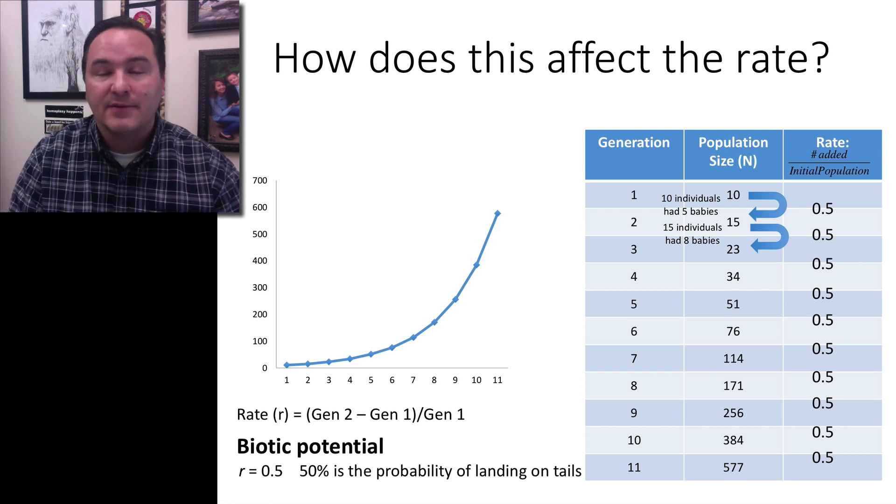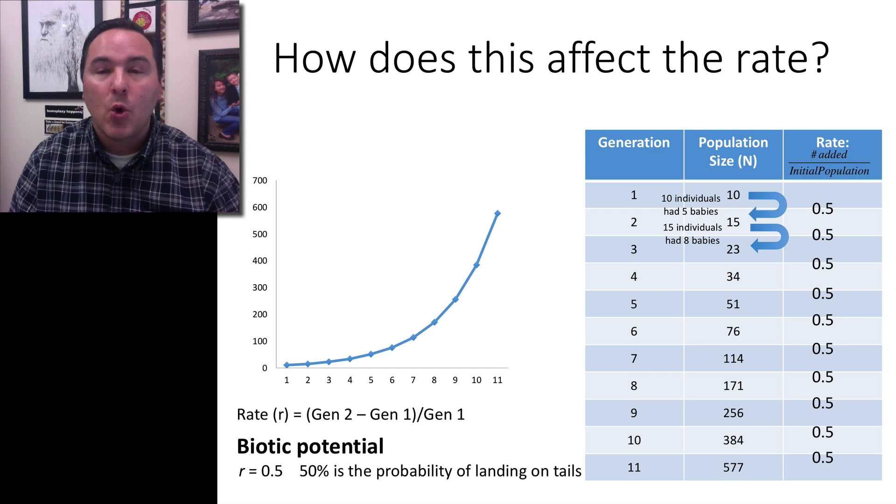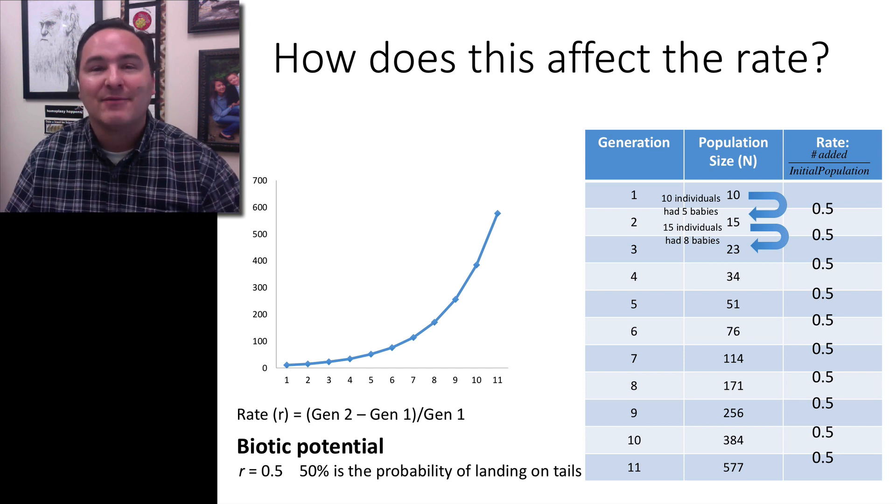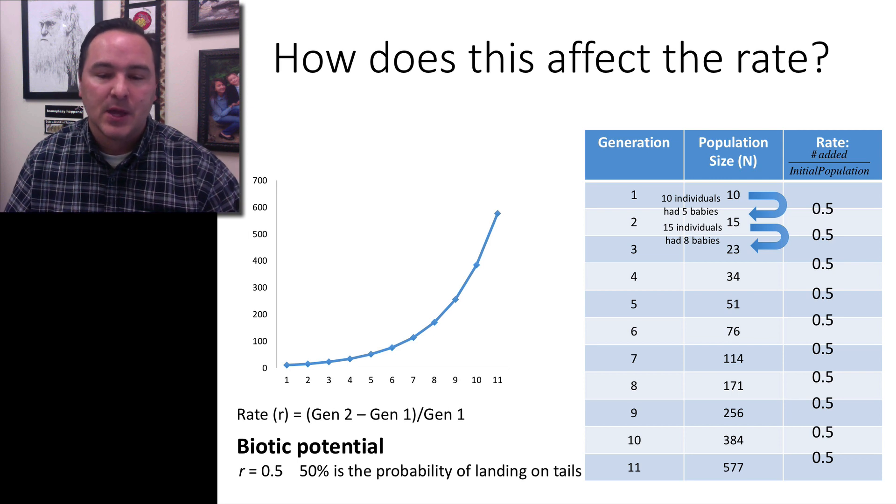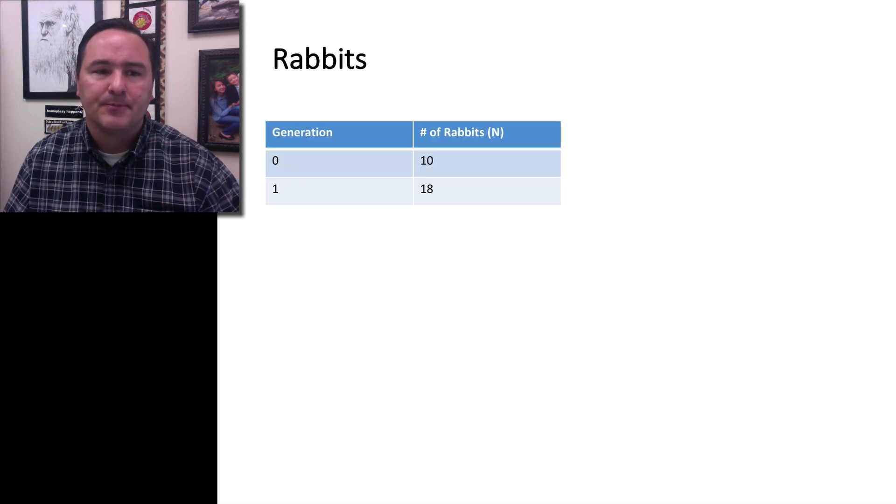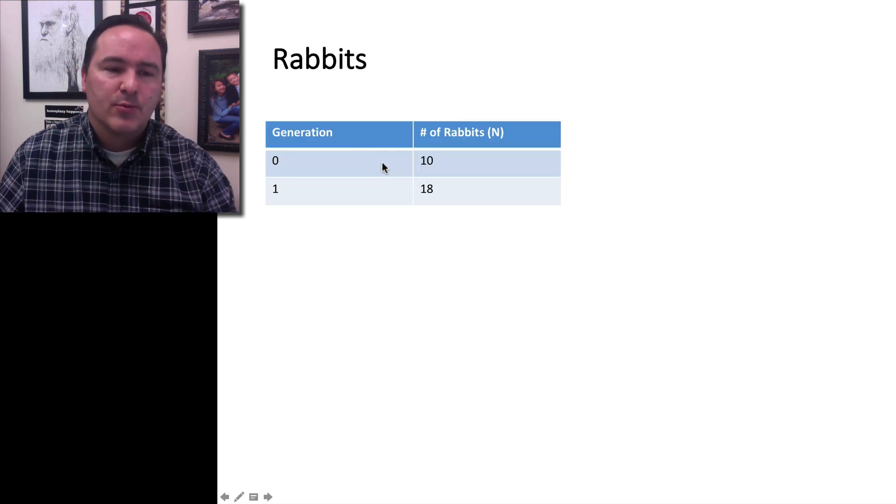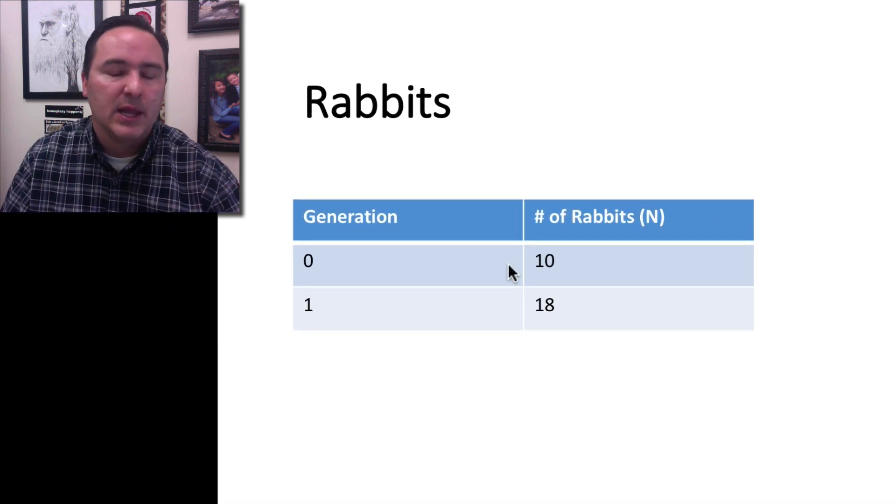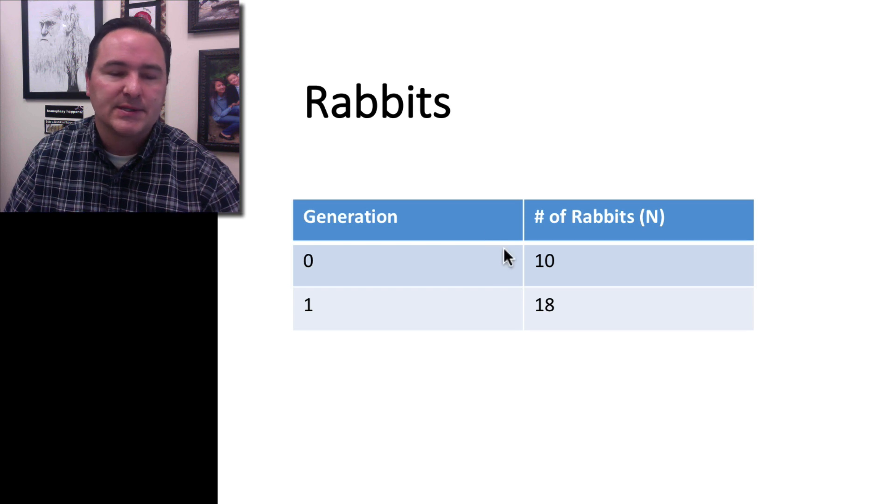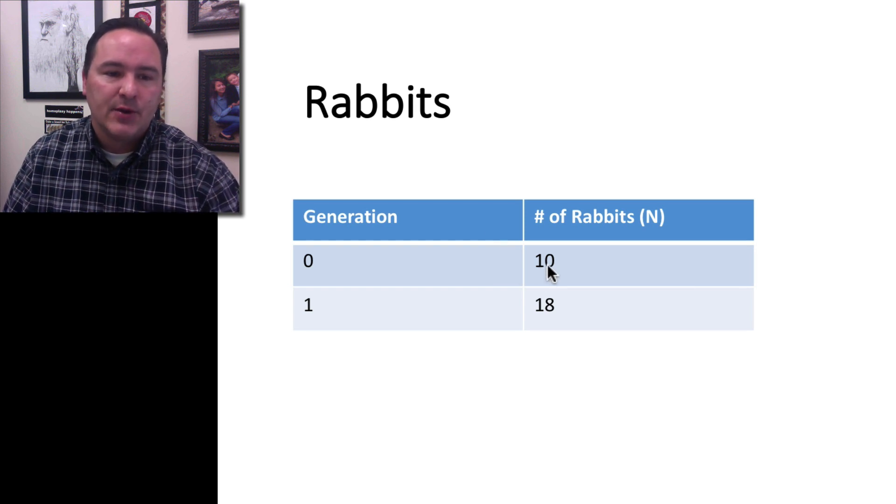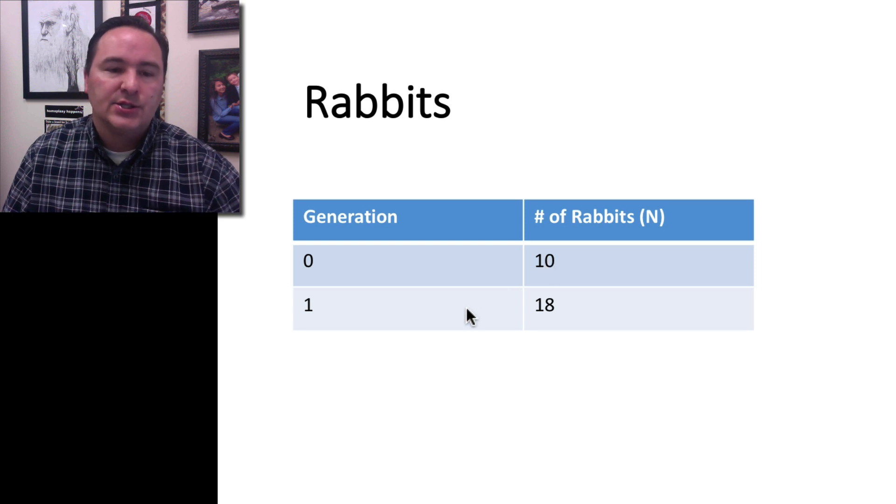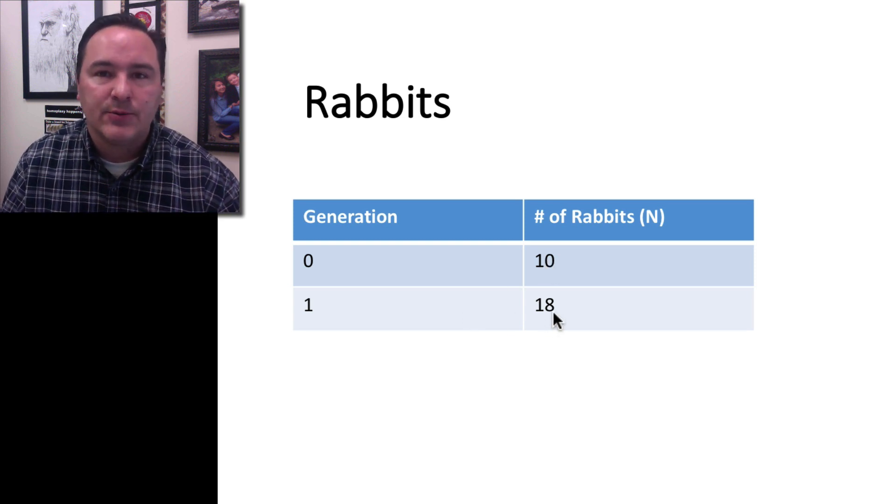We randomly assigned that on the coins because we assume if you flip a coin, you have about a half chance of it becoming tails. But let's look at more real data. We're going to look at some rabbits. This was data from a different place, not Australia. They looked at rabbits and said at generation 0, we have 10 rabbits. In generation 1, we now have 18 rabbits.